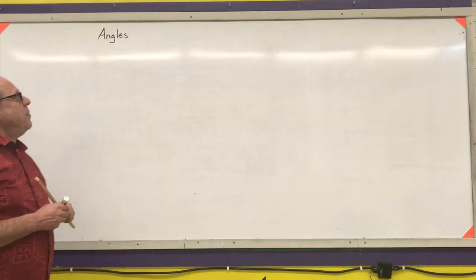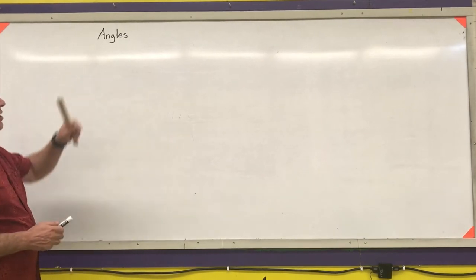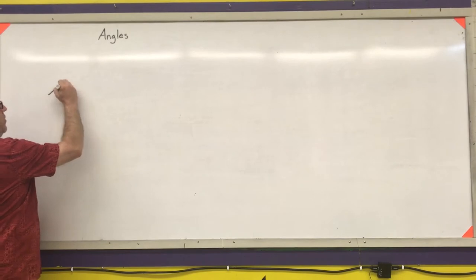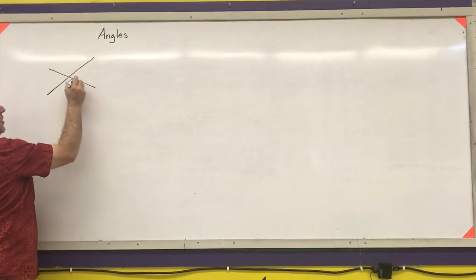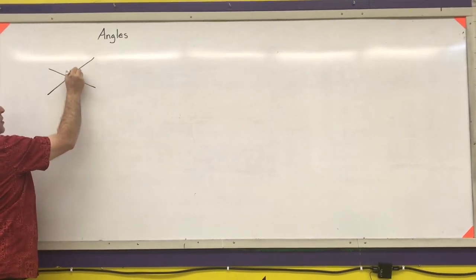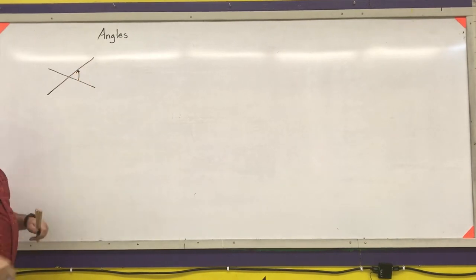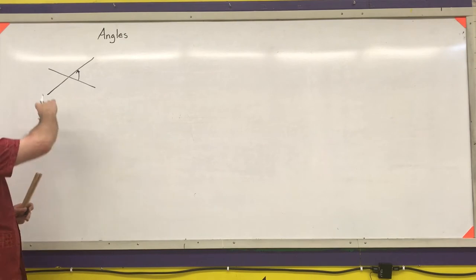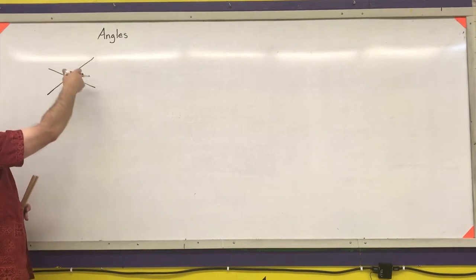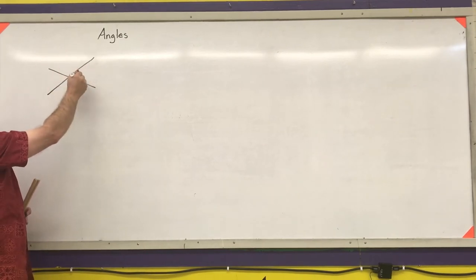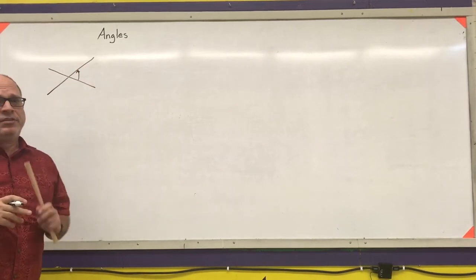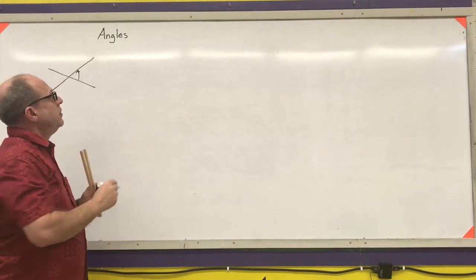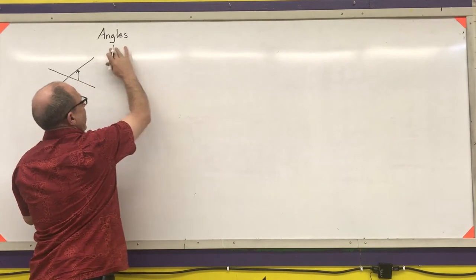In geometry, we came up with a definition of an angle. The geometric definition of an angle was the space formed by the intersection of two lines, rays, planes, or line segments — basically any straight objects where they intersected, measuring the gap between the two. We're now going to come up with a trigonometric definition for angles.